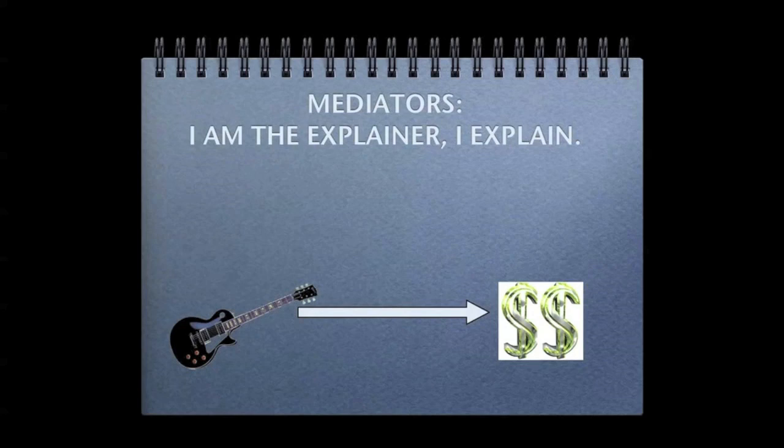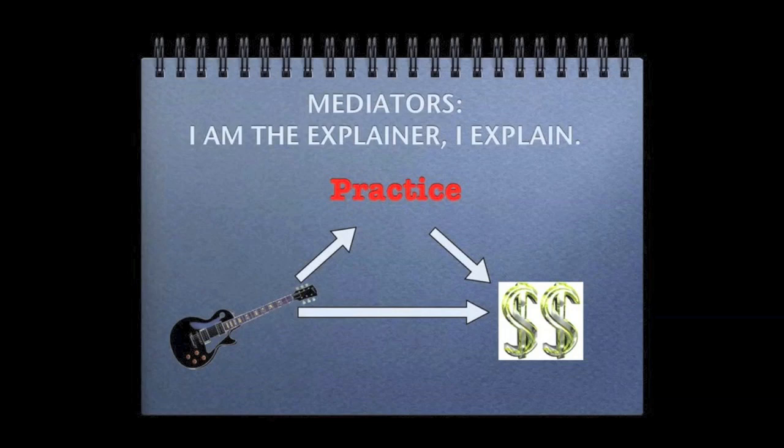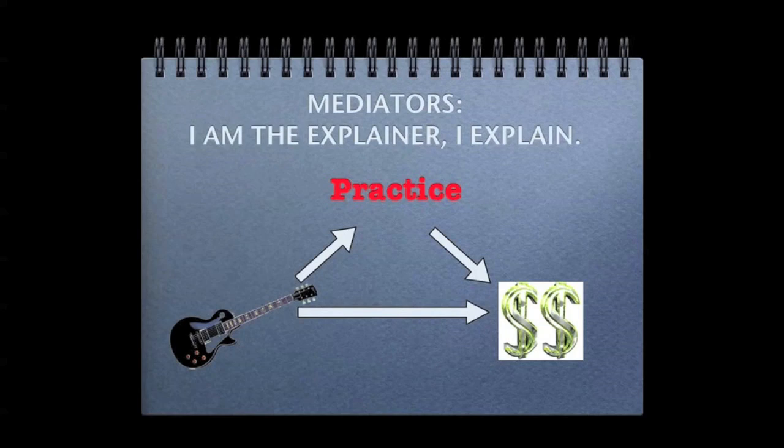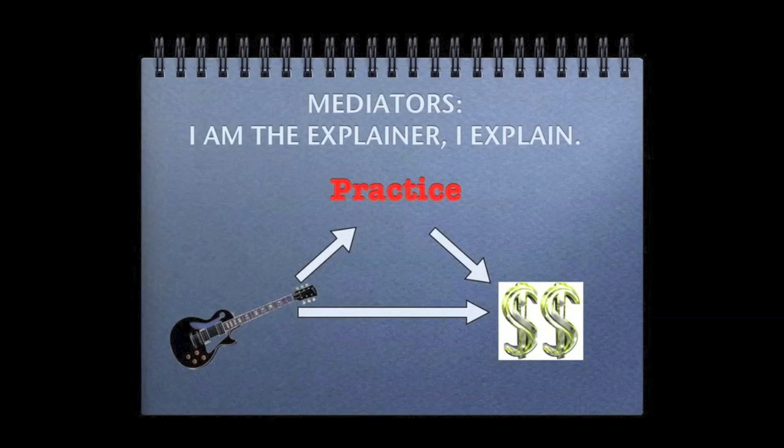So, there must be some other factor or variable that explains why it led to a record deal. What are we talking about? Practice? Perhaps receiving a super awesome Les Paul guitar makes you really motivated to practice a lot. And practicing a lot eventually got you that super lucrative record contract. So, your response to receiving the guitar, practicing tons and tons, explained the relationship between receiving the guitar and getting the super lucrative record contract. It was a mediator.